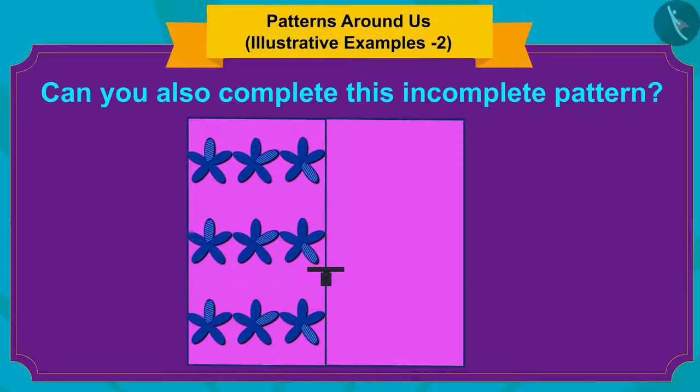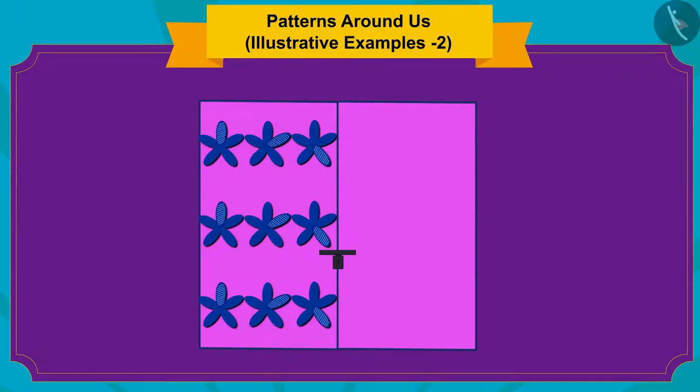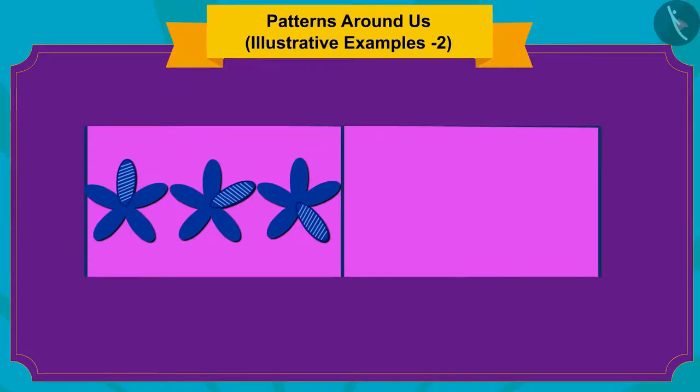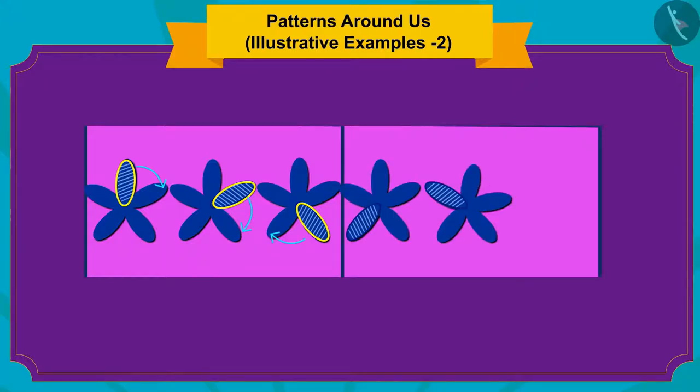Children, can you also complete this incomplete pattern? If you want you can stop the video and find the answer. Yes, the petal of the flower on which the diagonal design is made here is seen in the petal next to it in the next flower.